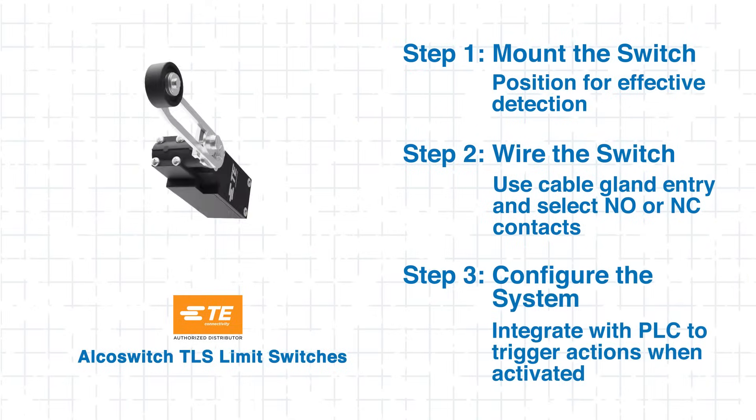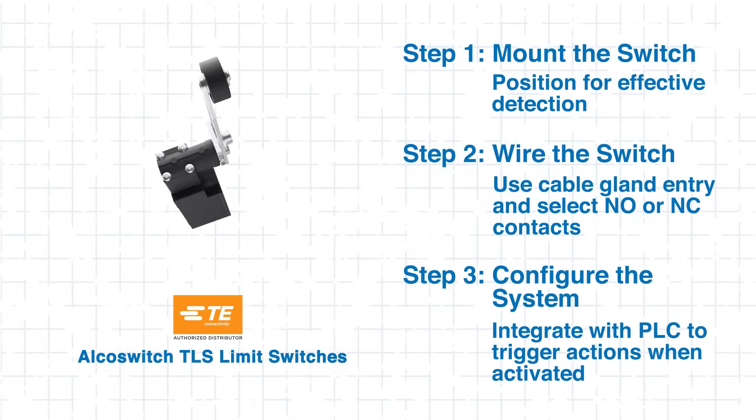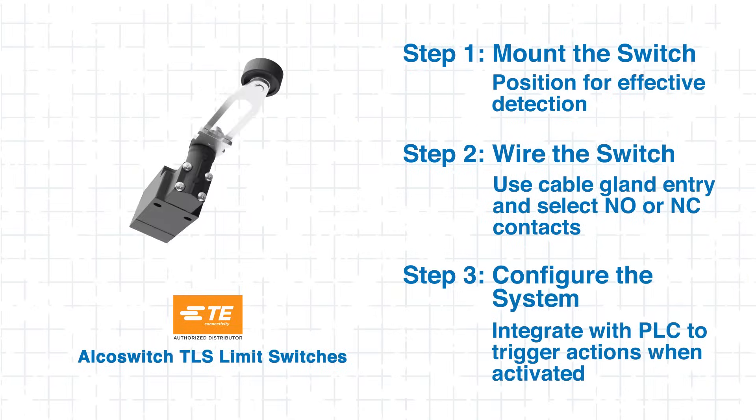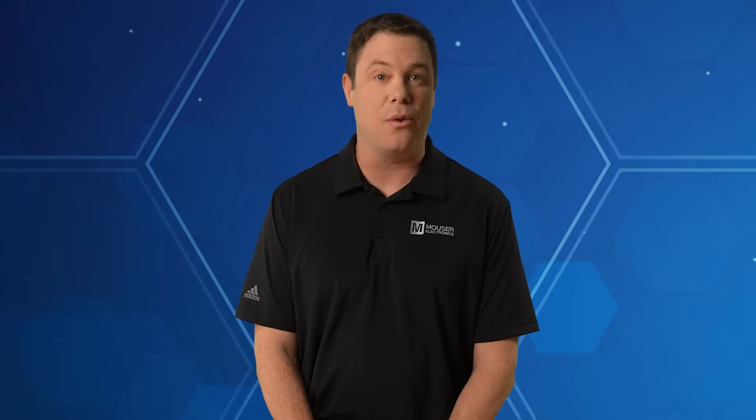Finally, integrate the switch into your PLC or control system. When triggered, it will send a signal to initiate actions like stopping the motor or activating an alarm. By following these steps, you can successfully integrate a TLS limit switch into your manufacturing line.